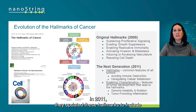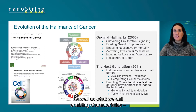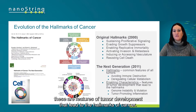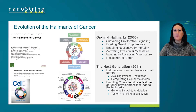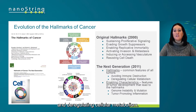In 2011, they updated these hallmarks to include both new hallmarks, which we consider to be common features of all cancers, as well as what we call enabling characteristics — features of tumor development that lead to the hallmarks of cancer. In this addition, they added avoiding immune destruction and deregulating cellular metabolism.